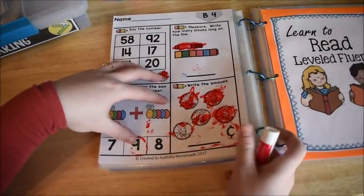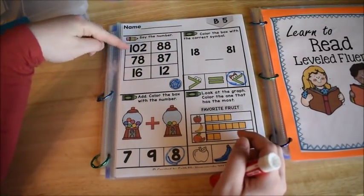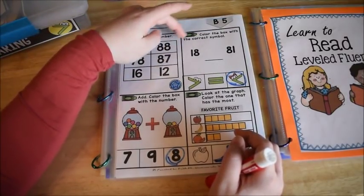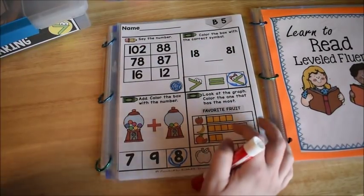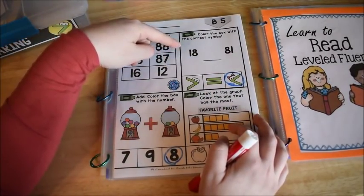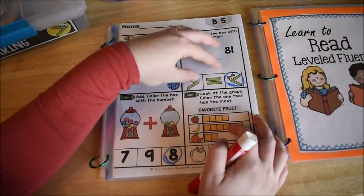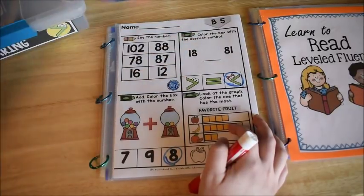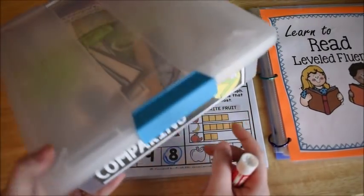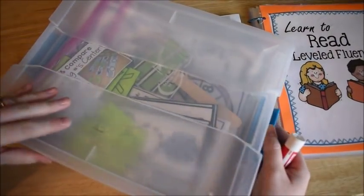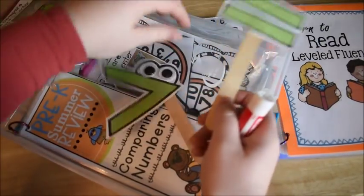So this is the page you're going to see him do today. I'm going to walk you through the rest of this page. So I showed you how they say the number. And then for this one, it says color the box with the correct symbol or circle it. And this one is doing greater than less than equal to. Now what I would do is this is something that you would want to introduce before they did this page. So for example, this unit that I pulled out from my math curriculum is on comparing numbers.